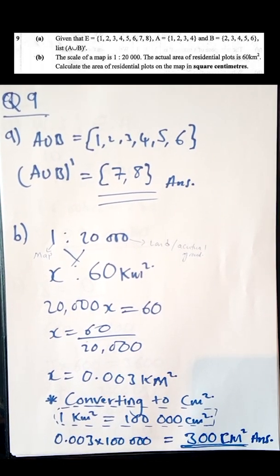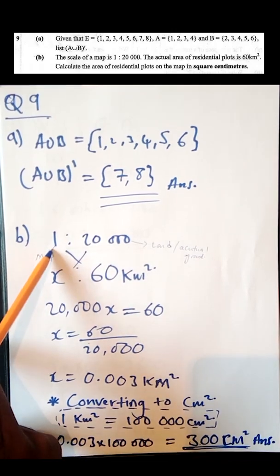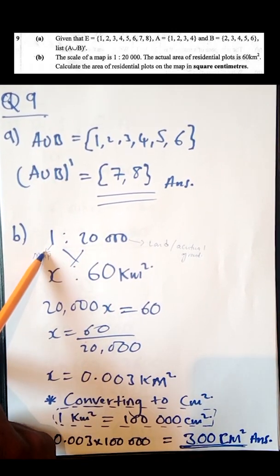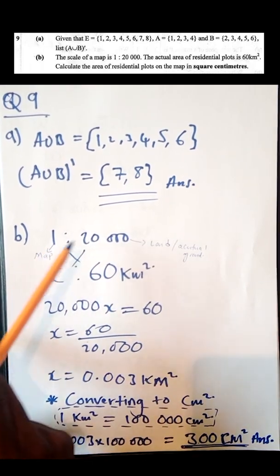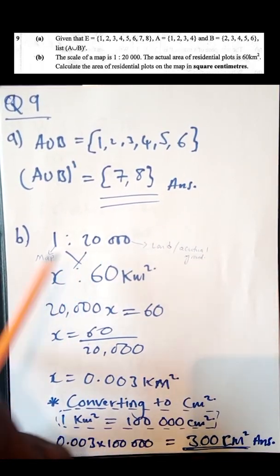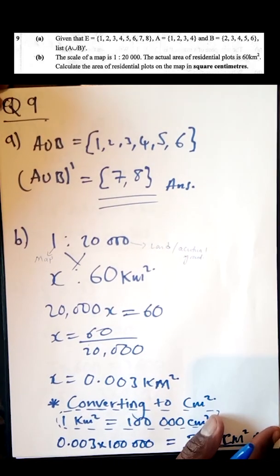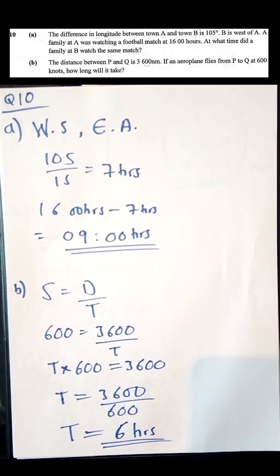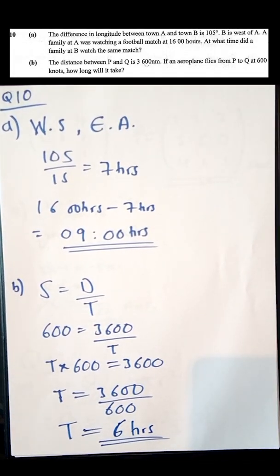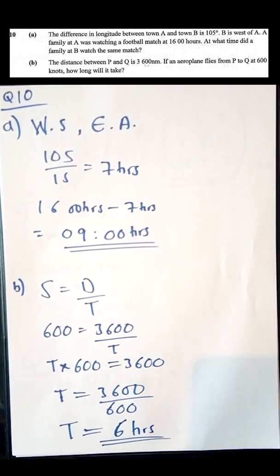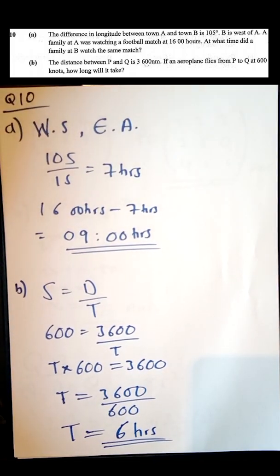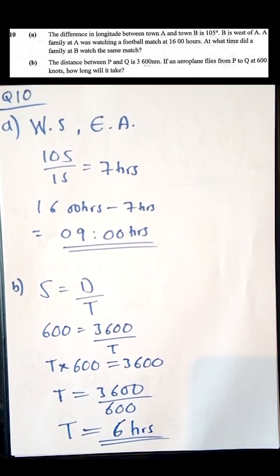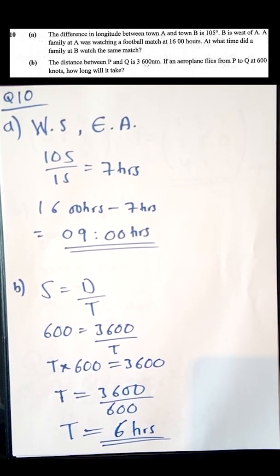The tip on these scale drawing questions: the number on your left-hand side represents the map, and the number on your right-hand side represents the actual ground. Moving on to the next question, which is under F-geometry dealing with time.